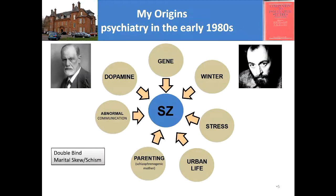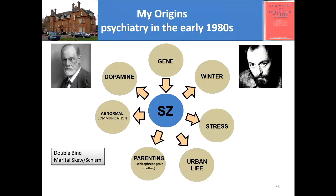Outside the mainstream, we had Sigmund Freud with theories about the origins of schizophrenia, and on the other side R.D. Laing. The problem is people with schizophrenia do not live ordinary lives - they're exposed to different environments, they're usually poor, often taking drugs, often malnourished. Anything disadvantageous, they're often experiencing it, which means you've got the opportunity for schizophrenia itself to be causing some of these things, not these things causing schizophrenia.